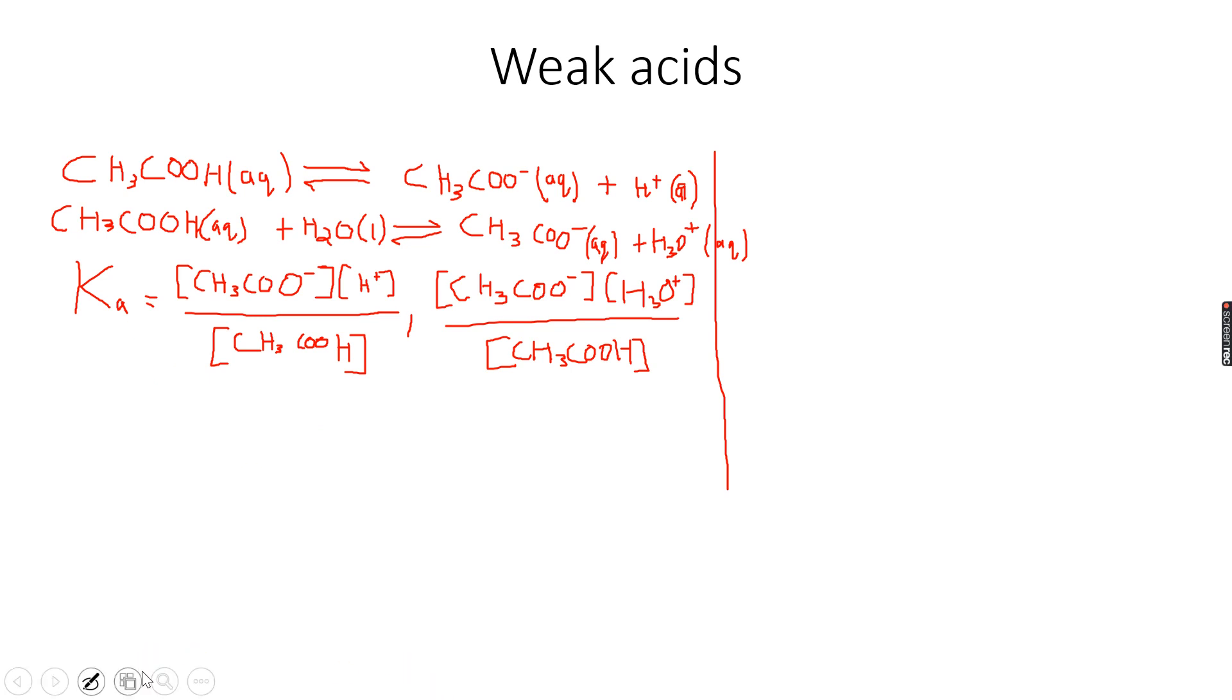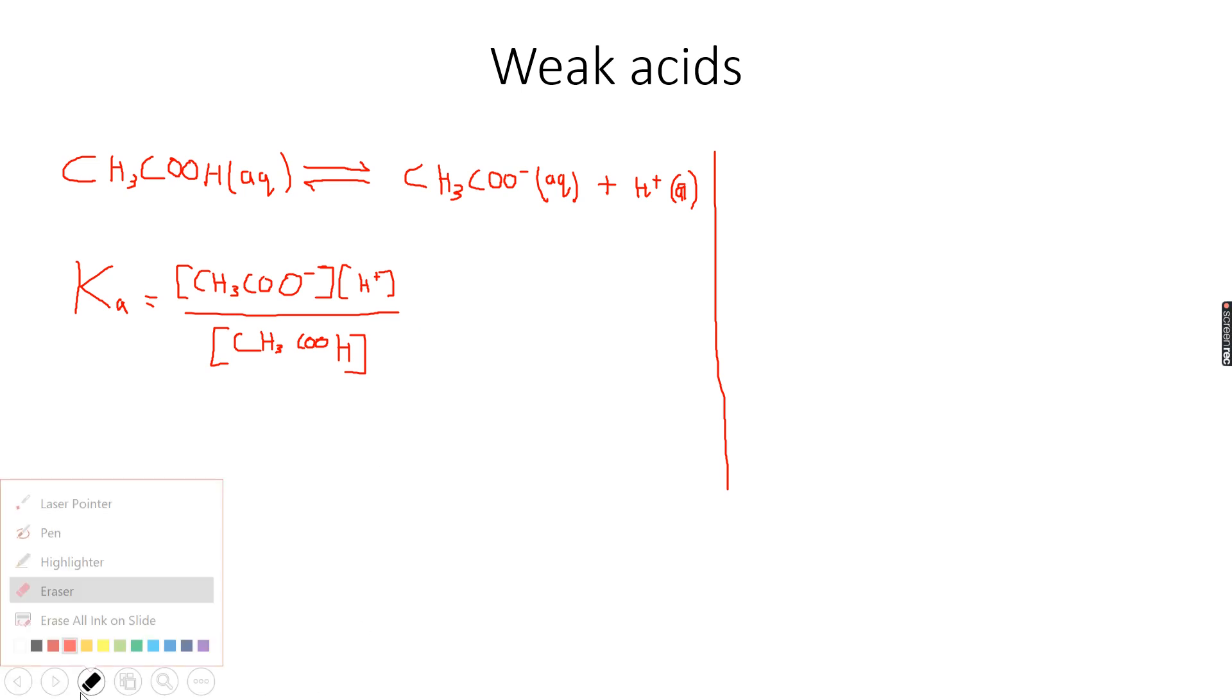Now let me erase this one, I've already explained it to you, so we don't need it anymore. Let me erase it so that this entire thing looks cleaner. So now we have this acid dissociation constant Ka and we have this equation.